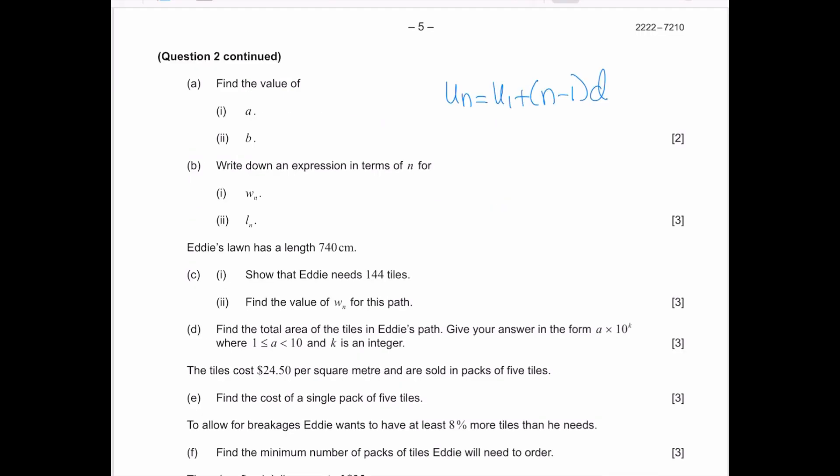From here I can go ahead and substitute. For the first pair of tiles I know that I have 20, based on the information that was given to me, plus n minus 1 times the common difference that is 10. Every single time you're adding by 10. So this is going to be 20 plus 10n minus 10, which is 10n plus 10. That is going to give me the width: it's going to be 10n plus 10.